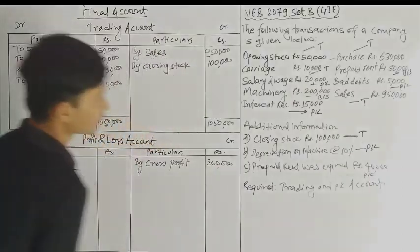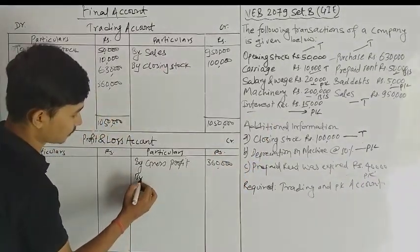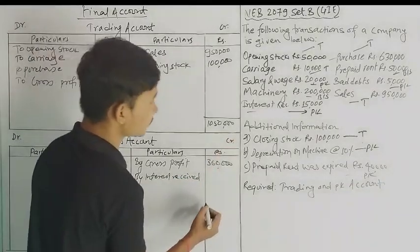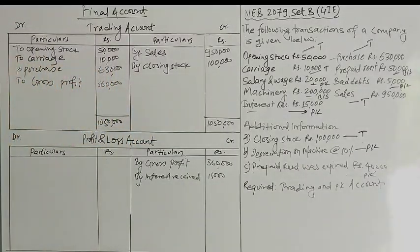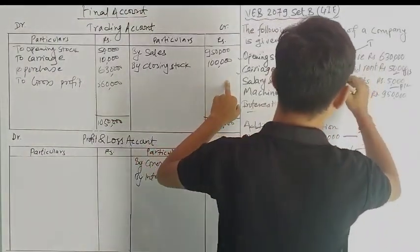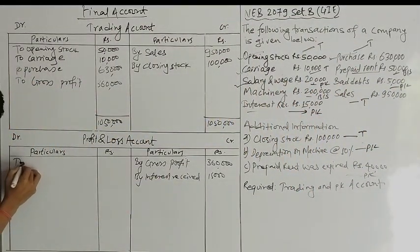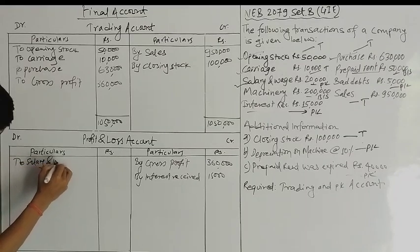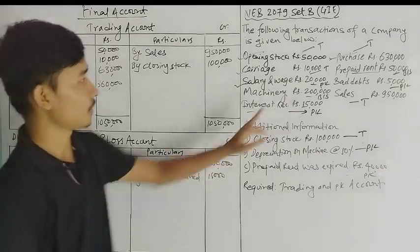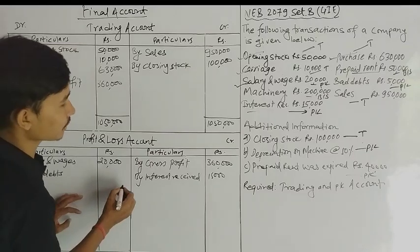I am going to go to the credit side of P&L. Commission received: 15,000. Salary and wages: 20,000. This is the balance of bad debts. Bad debts are equal to 5,000.